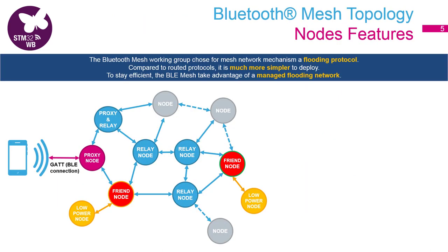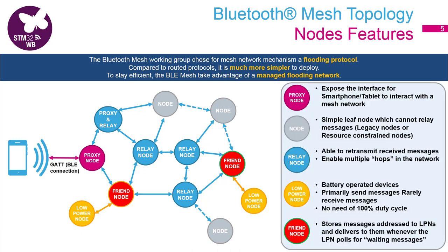Let's have a look at an example of a BLE mesh network. The nodes can support different features, listed on the right, and each node can support more than one feature at the same time. Probably the most important feature is the relay. A relay node is able to receive and retransmit messages, extending the range by relaying the message from one node to another until the message is received.